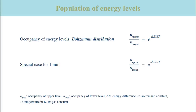Now we ask which of the many energy levels is occupied when we do our experiments. The relative occupancy of two states with an energy difference delta E is given by the Boltzmann distribution. The Boltzmann distribution gives the occupancy of the upper energy level N_upper relative to the occupancy of the lower energy level N_lower. This ratio equals e to the negative delta E divided by Boltzmann's constant k times the temperature T. A special case is calculated for one mole of molecules, where k is replaced by the gas constant R. Remember that RT equals 2.5 kJ per mole at room temperature.